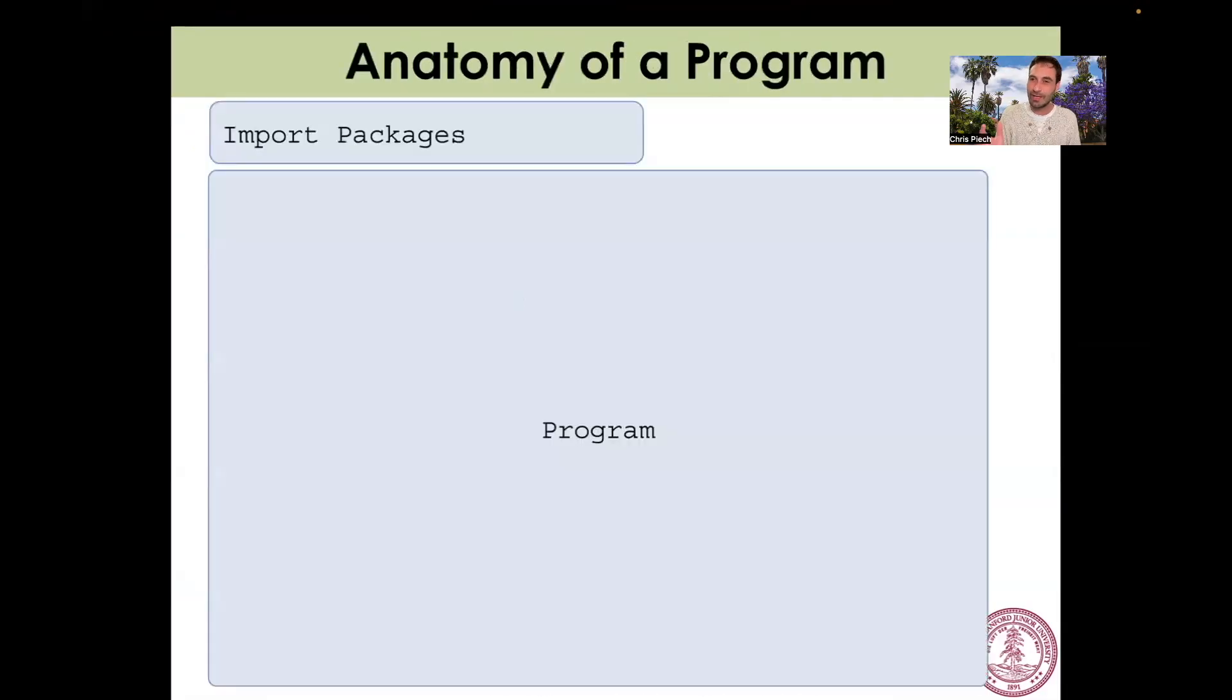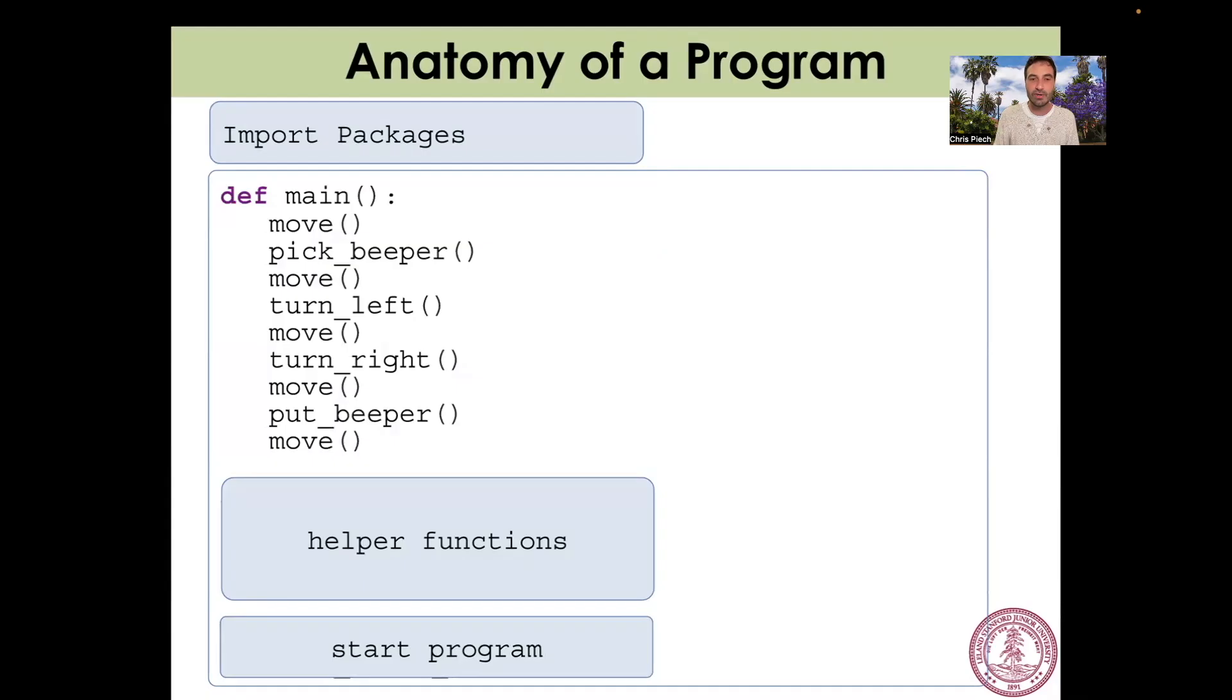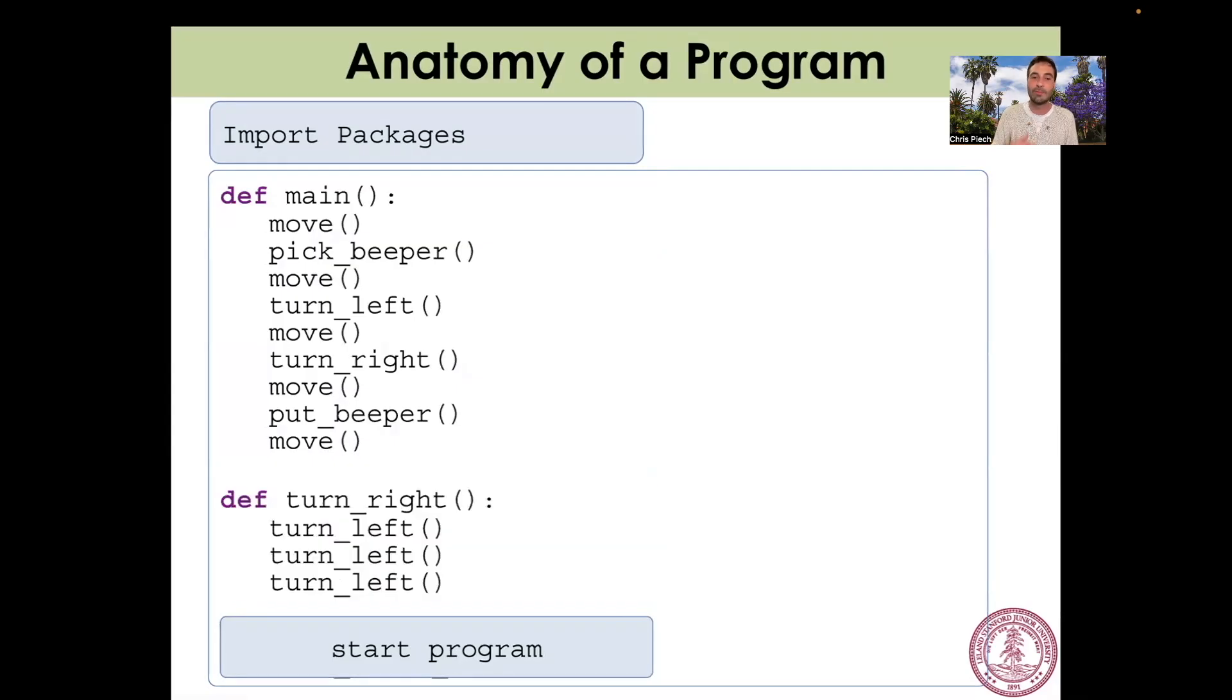Okay, so let's see how those fit into the whole program. Here's the anatomy of a program. A program has a main function, that's where you do def main. It then has all the helper functions. That's what we call those things where you introduce turn right, maybe turn around, maybe move to wall, whatever functions you want to introduce to Carol, we call those helpers, and often we write them underneath main. And then there's some code to start the program. So your main function can be a sequence of commands, your helper functions, and you can have as many as you want, go one after another outside of the main, and then you can introduce new vocabulary.